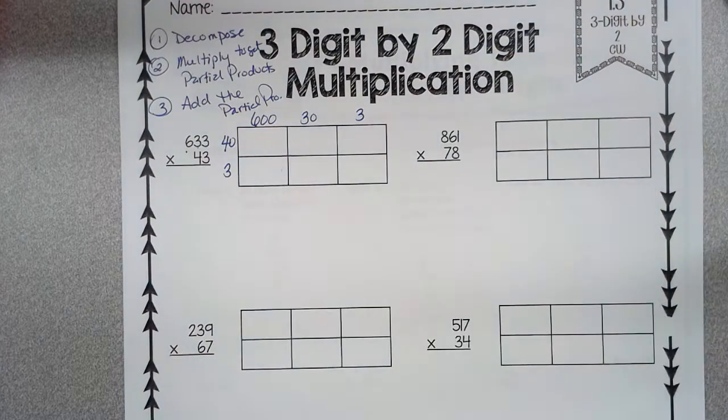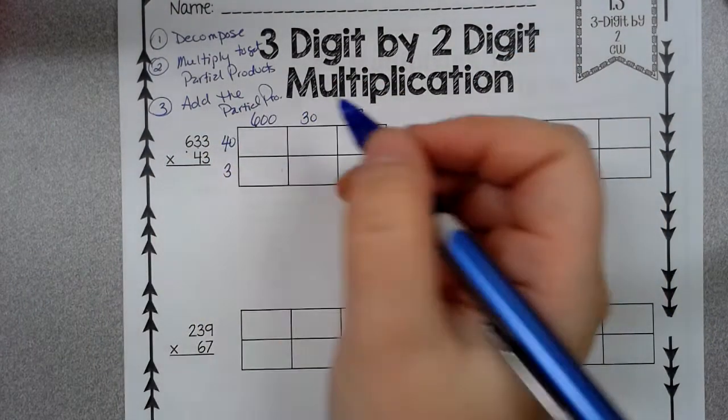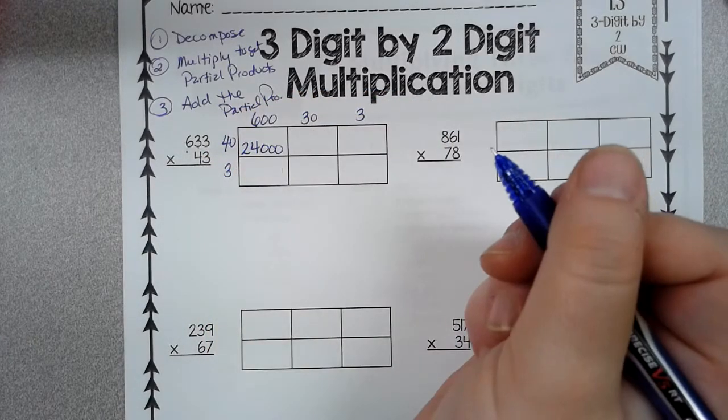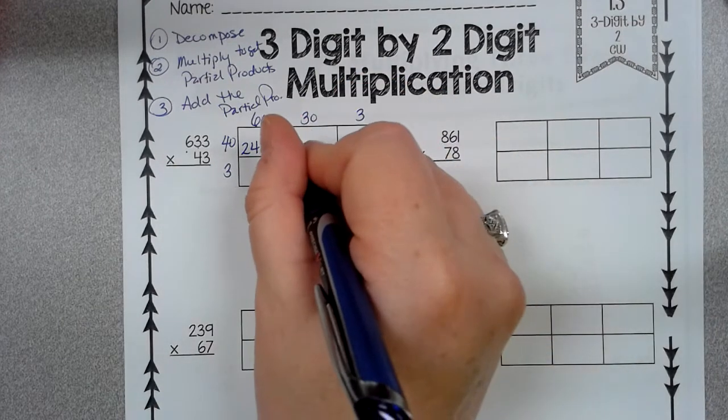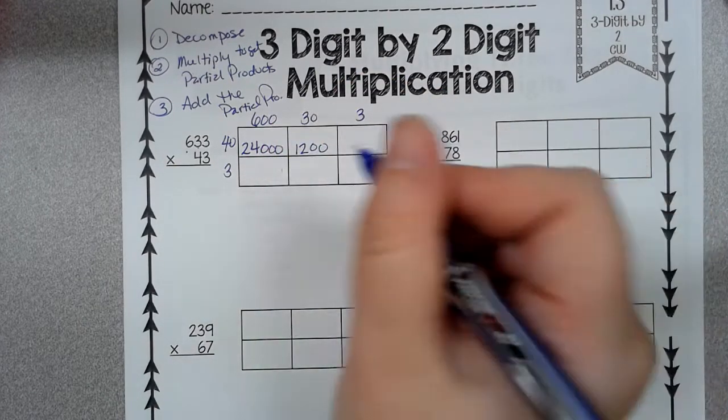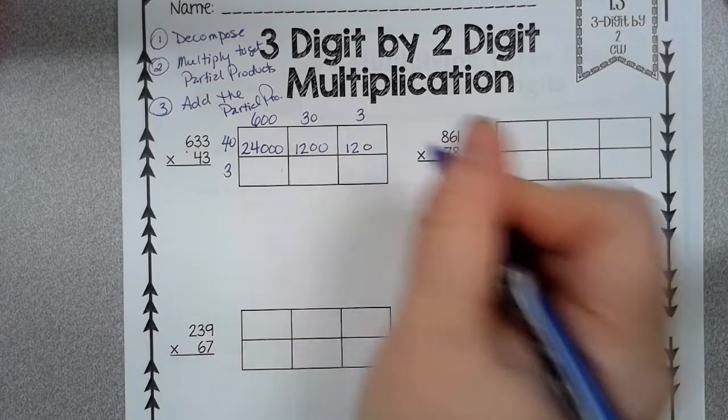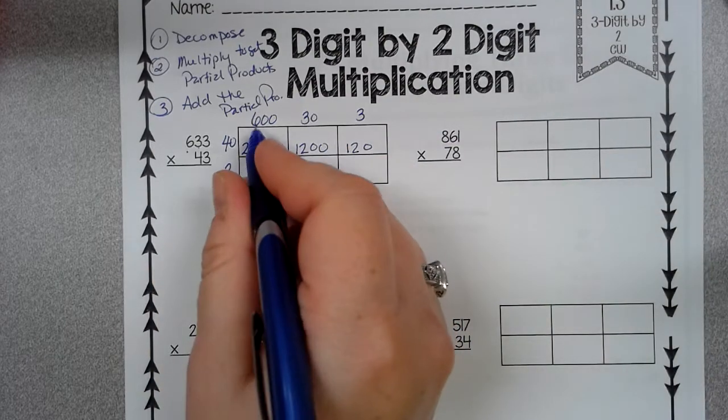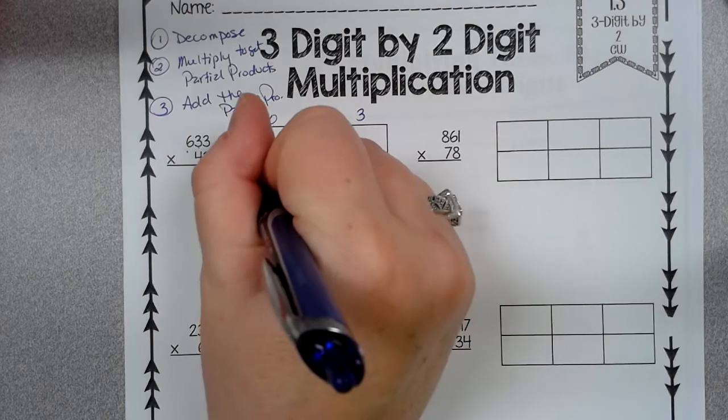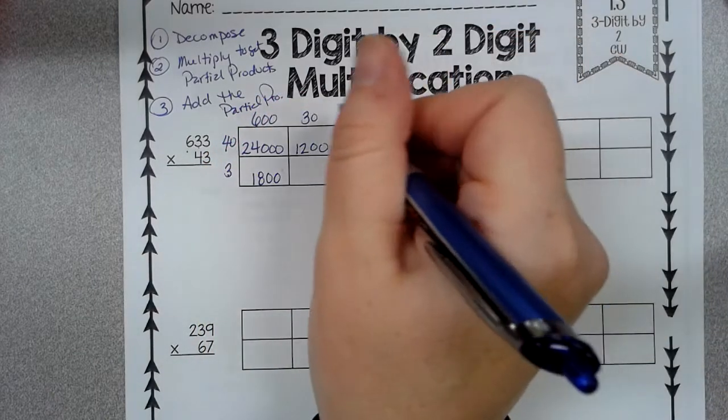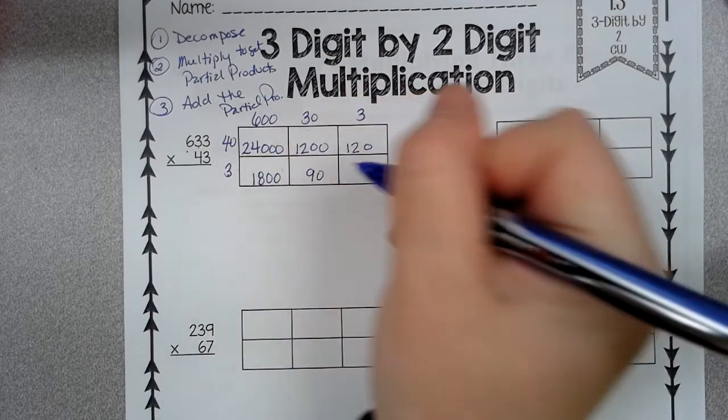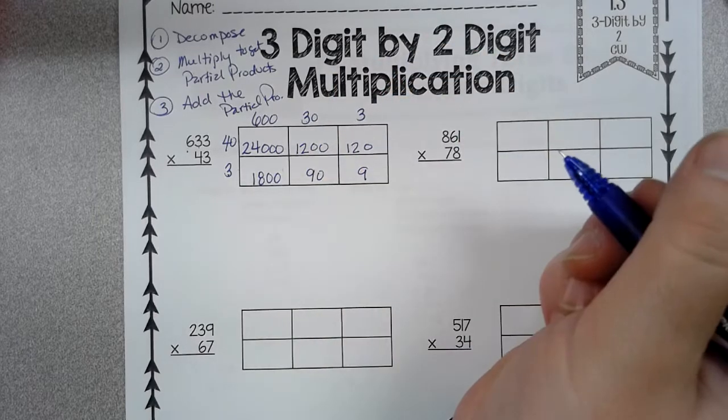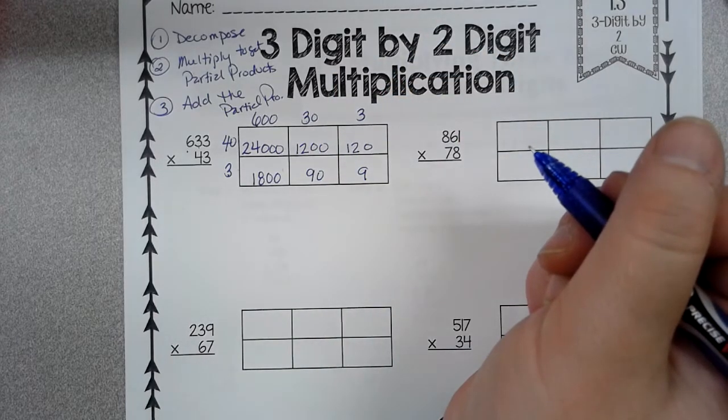So now all we have to do is multiply. So 4 times 6 is 24, with 3 0's. 4 times 3 is 12, with 2 0's. 4 times 3 is 12, with 1 0. 3 times 6 is 18, with 2 0's. 3 times 3 is 9, with 1 0. And then 3 times 3 is 9. So now all we have to do is add.